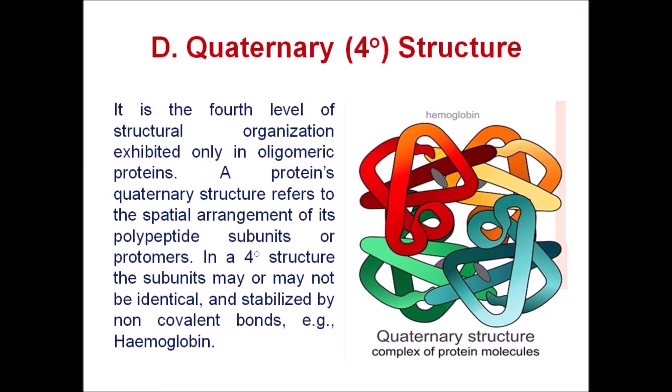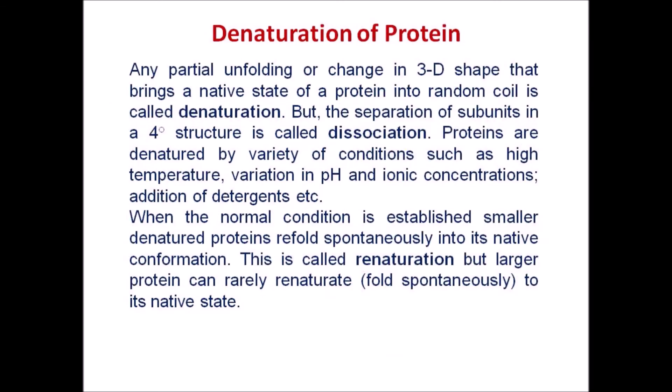Quaternary structure is the fourth level of structural organization, exhibited only in oligomeric proteins. It refers to the spatial arrangement of polypeptide subunits or protomers, which may or may not be identical, and are stabilized by non-covalent bonds. An example is hemoglobin, which consists of two alpha chains and two beta chains.